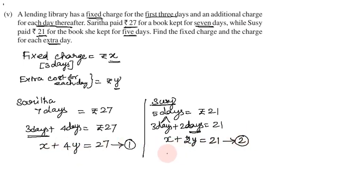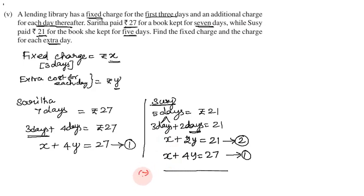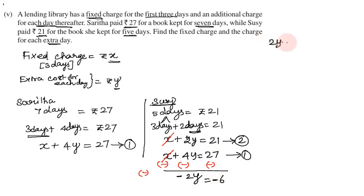Since x is the same in both equations, we subtract equation 1 from equation 2. x minus x cancels, and 2y minus 4y gives minus 2y, which equals 21 minus 27, which is minus 6. So minus 2y equals minus 6, and y equals minus 6 divided by minus 2.